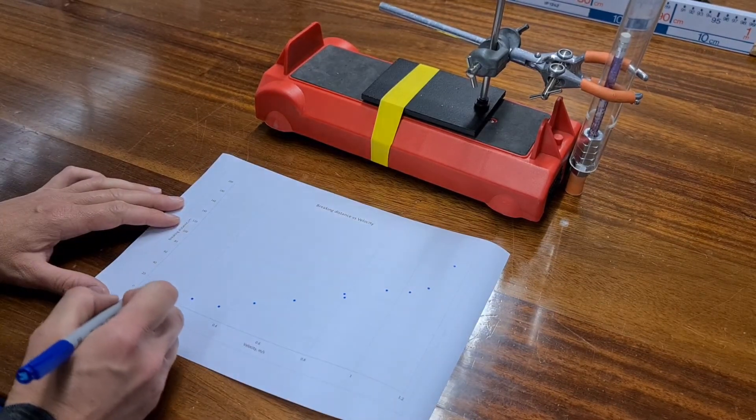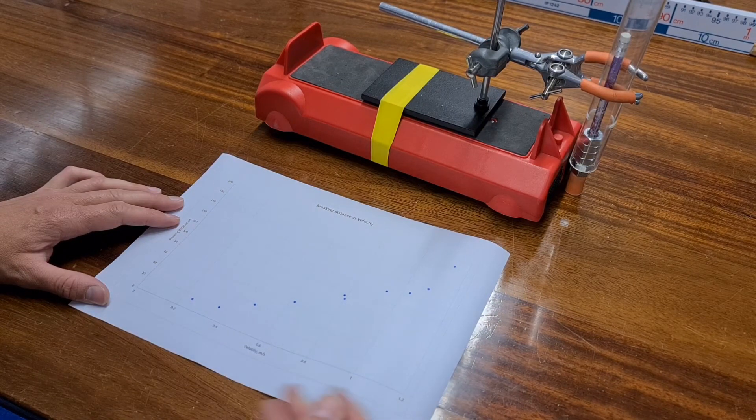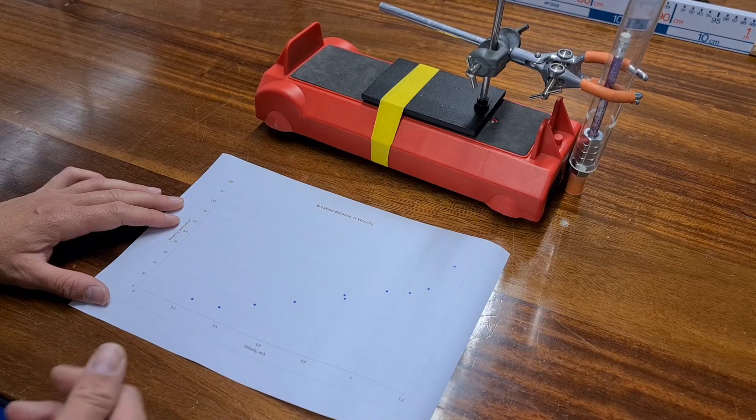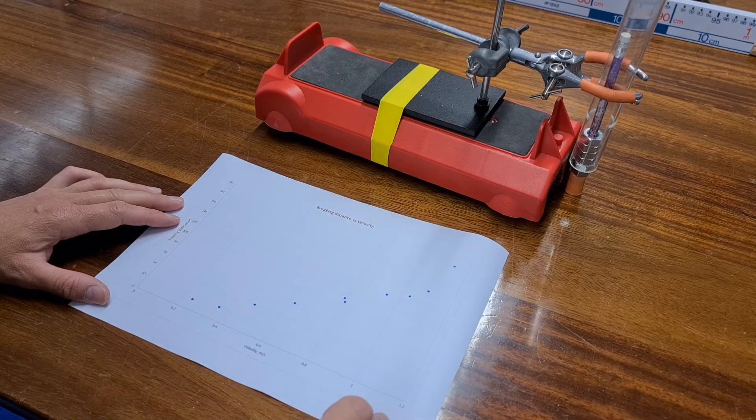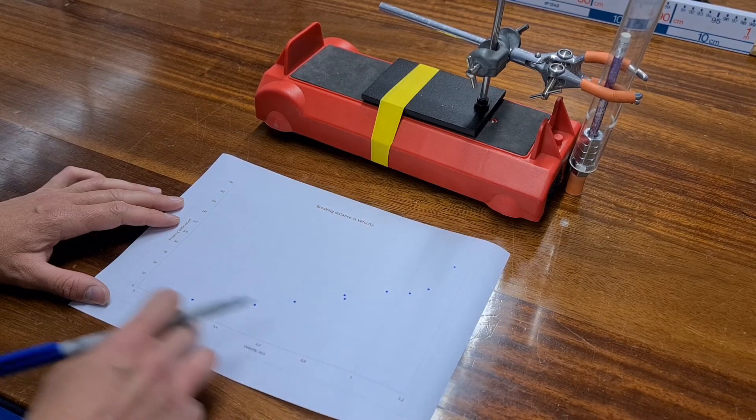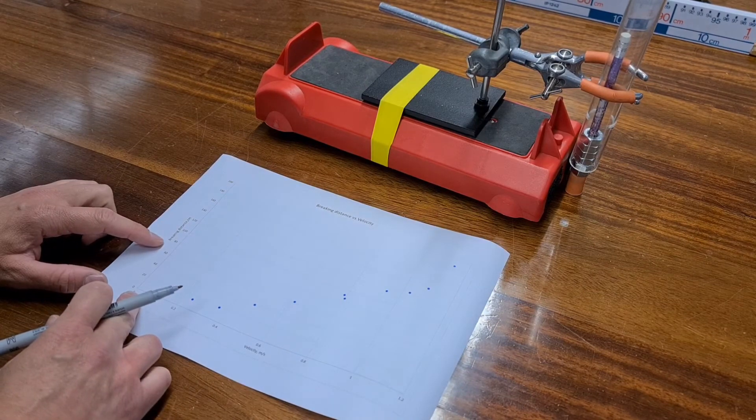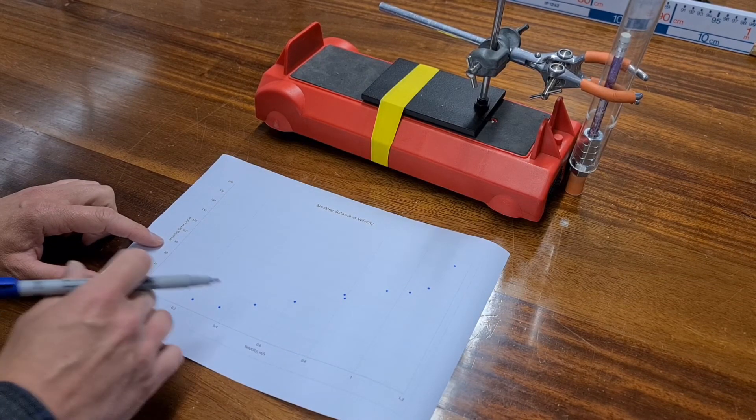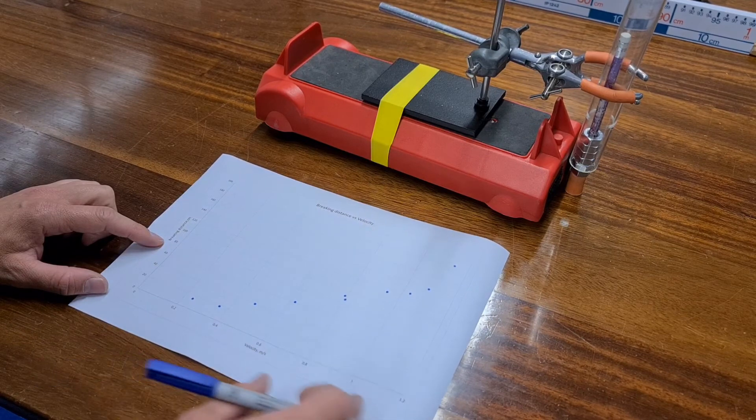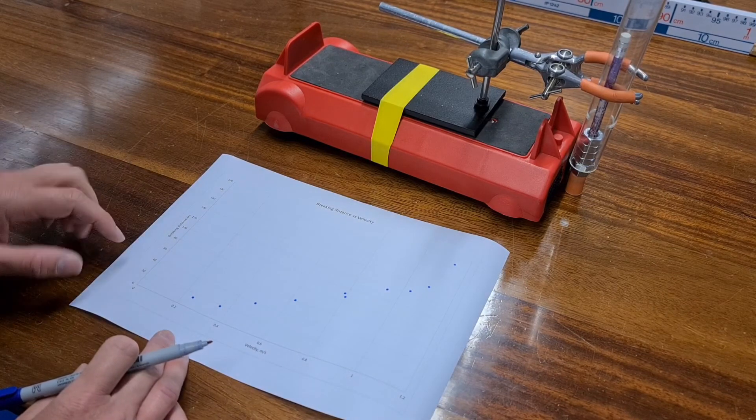And here is our data. You can see that we've plotted the independent variable, the thing that we were in control of, on the x-axis here, that's the velocity. On the y-axis we've plotted the dependent variable, the thing that we were measuring the change in when we changed the independent variable. That's the braking distance.